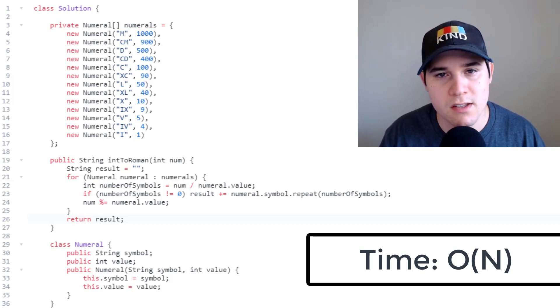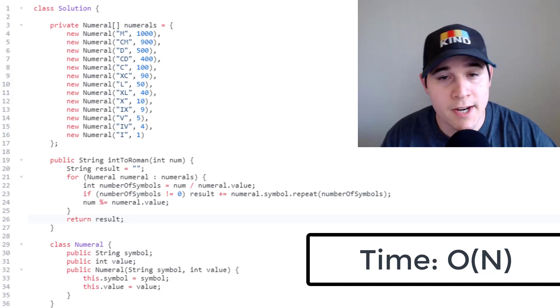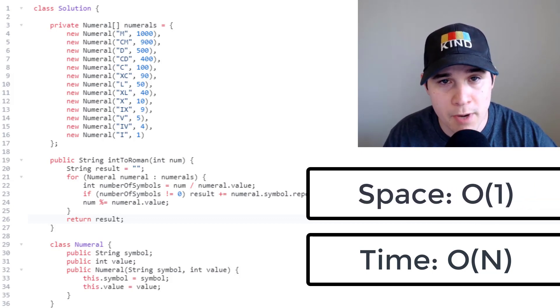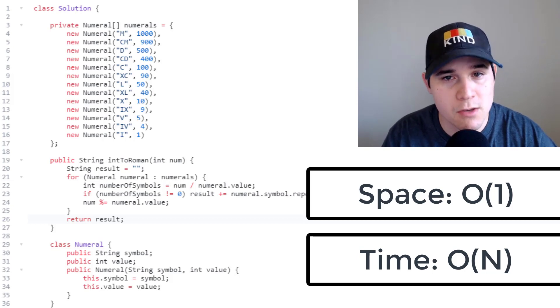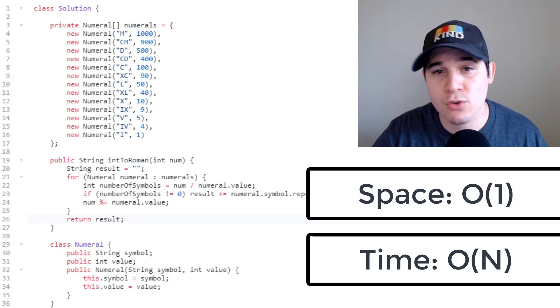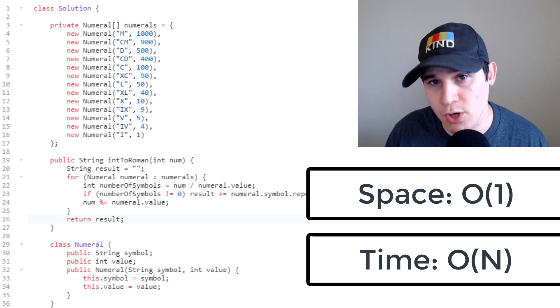Also I have seen some people say that this algorithm is running in constant time since our input is restricted, but I would say that you should always define what n should be and n in this case is the number of characters. And then as for our space complexity it's constant, we don't initialize any extra memory. The numerals array once again does not contribute to our space complexity because it's not going to grow in size as our input grows.